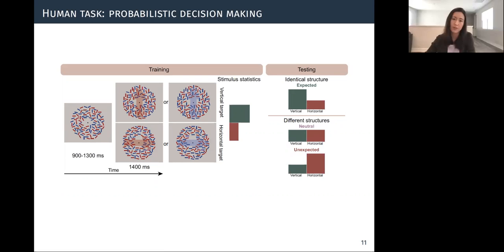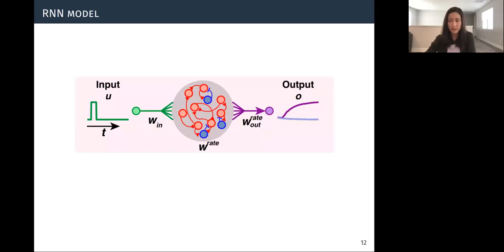So then, next, we trained our recurrent network model on a similar task. But first, as a background, recurrent neural network models have recently been used to investigate various components of neural mechanism or neural computations, such as perceptual inference and working memory. And because RNN models allow an experimenter to manipulate many aspects of the sensory environment and learning processes, including the network architecture, the task, and the stimulus set, these models offer a complementary approach to in vivo methods.